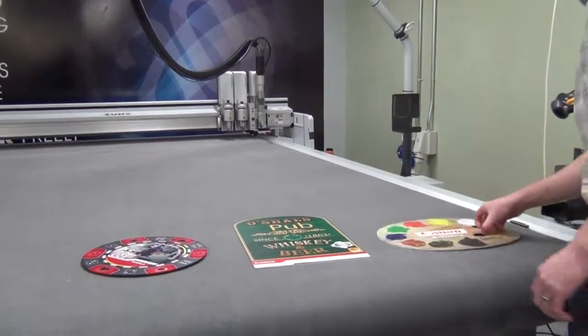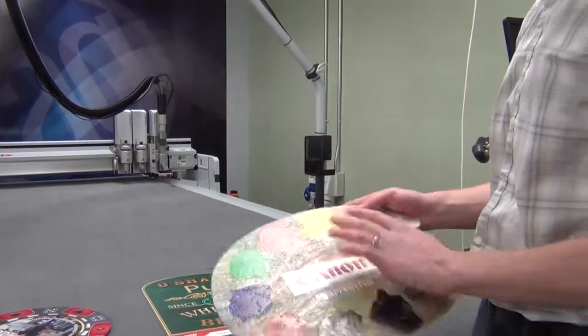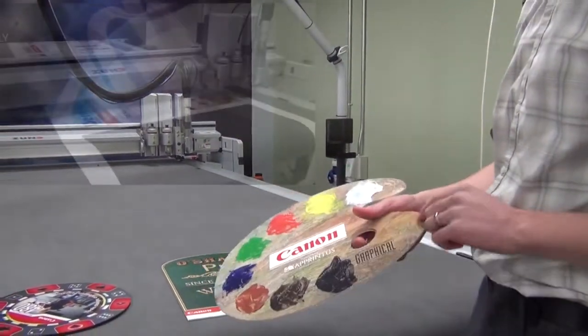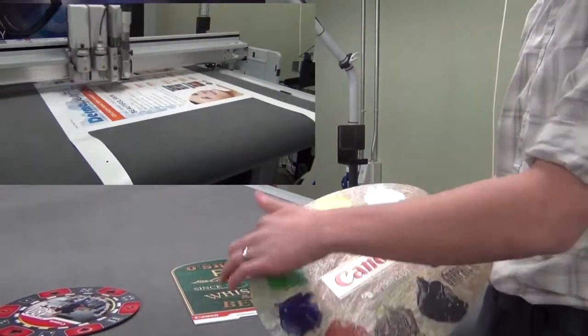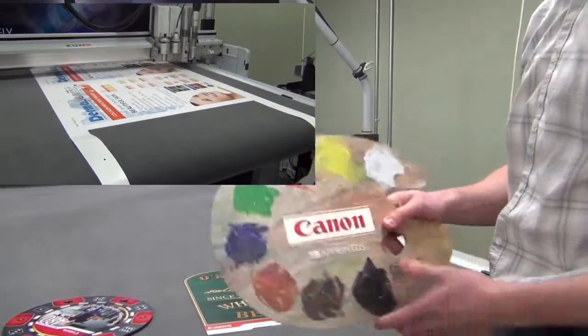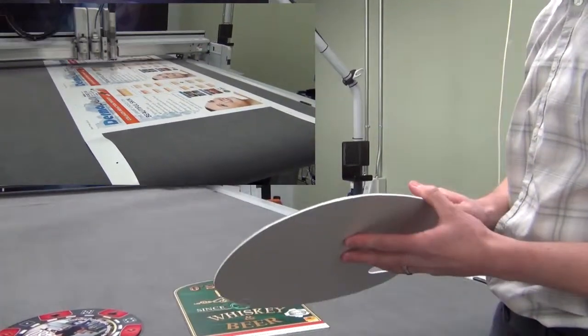This looks like a painter's board, but we've cut this out. We can cut any shape really - you can see it's really smooth. This is like a die bond or composite material.